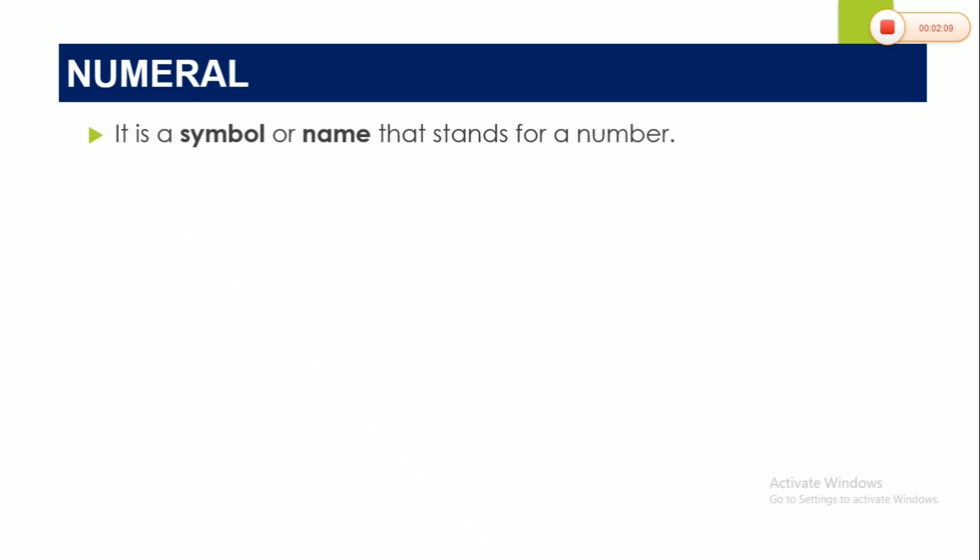Actually, numeral is a symbol or name that stands for a number. Yes, correct. So let's see the examples. Okay, so we have 133 in symbol. Yes, this is the symbol. We have the name, which is one hundred thirty-three or 133 are numerals. These are numerals, not a number. But in some books, we usually use the word number instead of numeral. Confusing, right? So again, number is an idea. Numeral is a symbol. That's it.